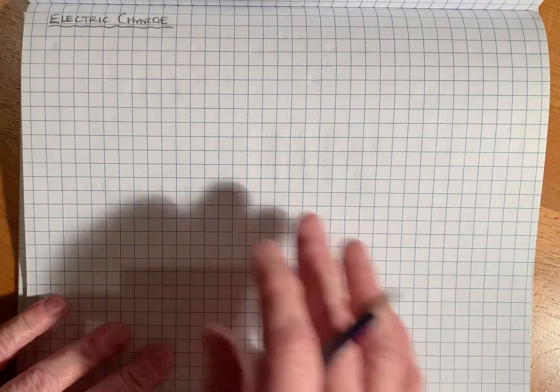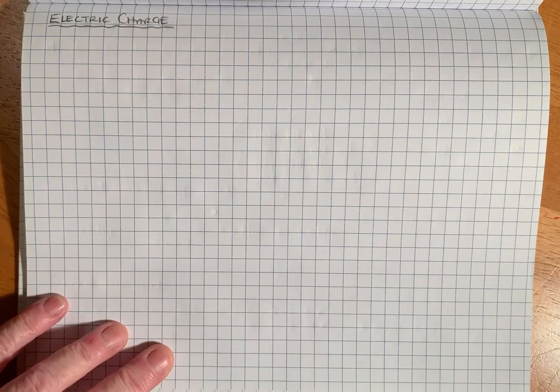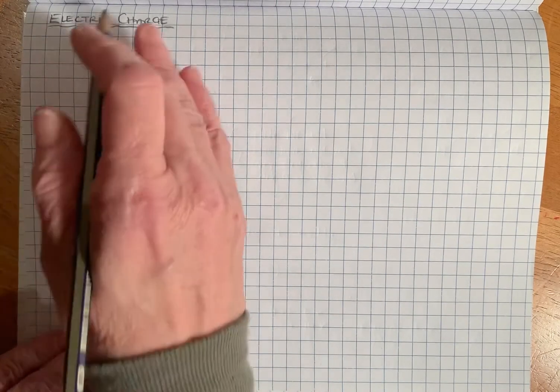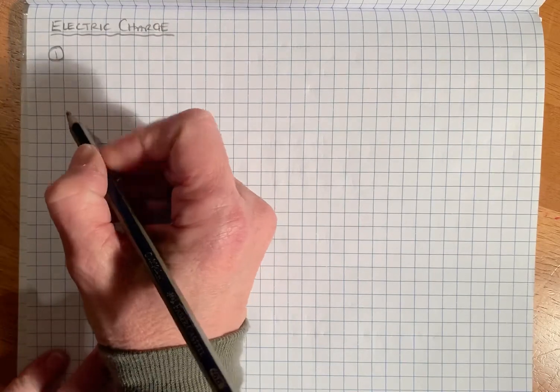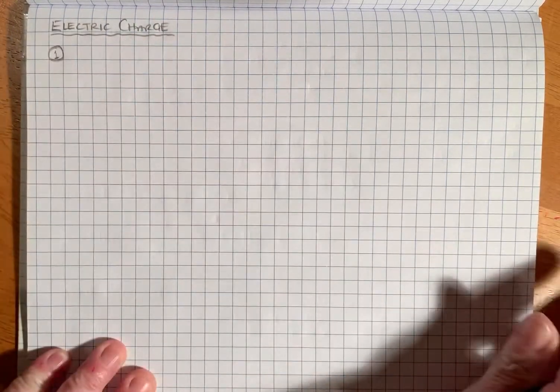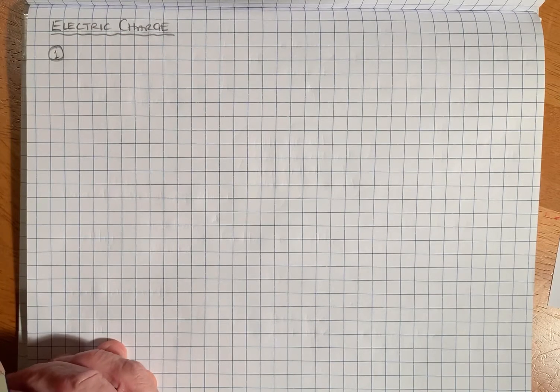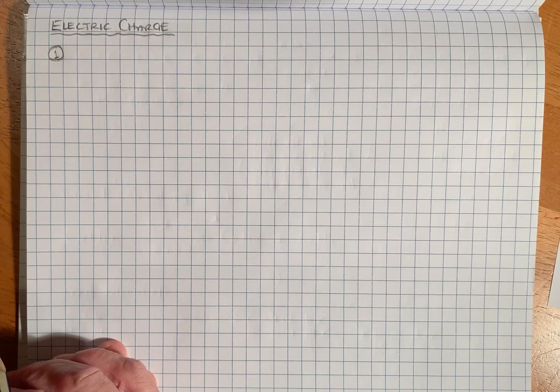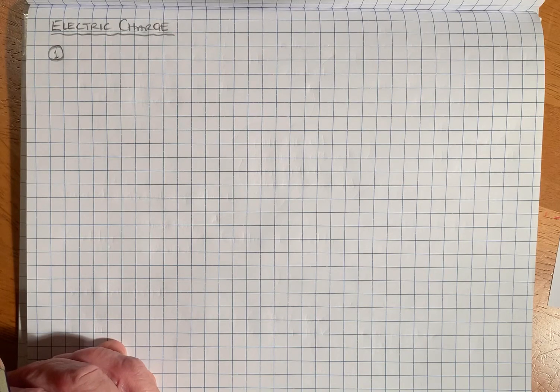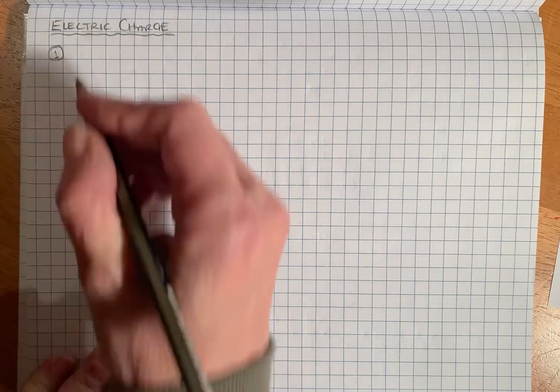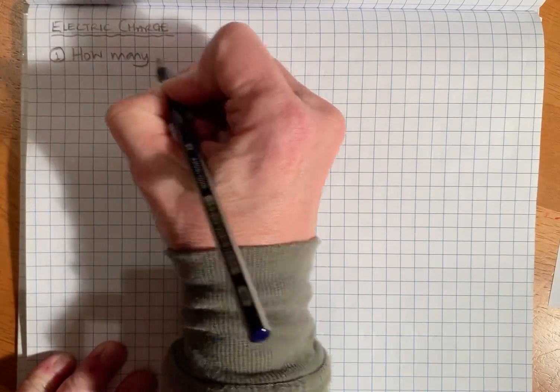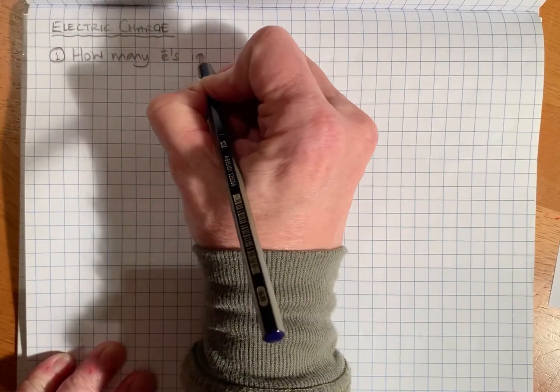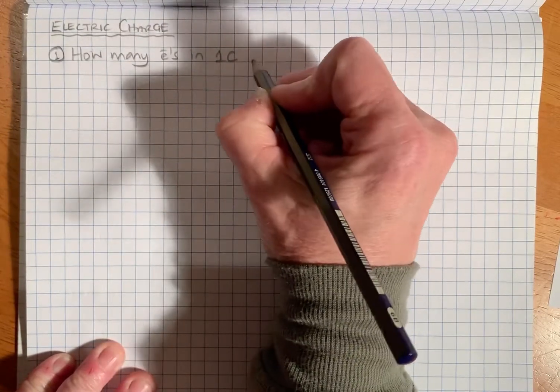Today we are looking at electric charge and we've got four questions here to answer. We're going to use our GUESS method of solving problems. Question number one says one coulomb is the quantity of electricity transported in one second by a current of one amp. The question is asking how many electrons in one coulomb of charge?